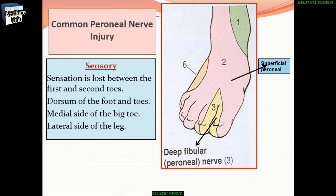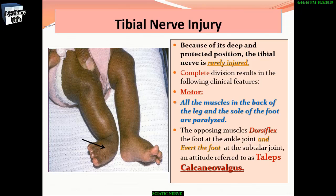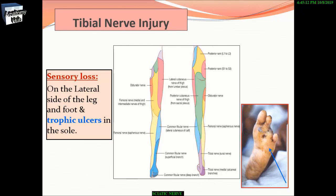Sensory loss in common peroneal nerve injury also affects the dorsum of the foot and toes, the medial side of the big toe, and the lateral side of the leg. The tibial nerve, because of its deep and protected position, is rarely injured. Complete division causes paralysis of all muscles in the back of the leg and sole of the foot. The opposing muscles dorsiflex the foot and evert it at the subtalar joint — an attitude referred to as talipes calcaneovalgus. Sensory loss occurs on the lateral side of the leg and foot, with trophic ulcers in the sole.